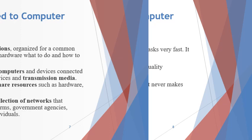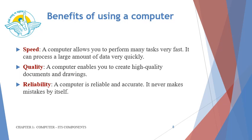Now let us understand the benefits of using a computer. The first and foremost being speed — a computer allows you to perform many tasks very fast, and it can process a large amount of data very quickly. The computer also enables you to create high quality documents and drawings. Reliability — a computer is a reliable and accurate machine. It never makes mistakes by itself. It follows the GIGO principle, which means garbage in, garbage out. Only when the input is garbage does it produce garbage output; otherwise it is the most reliable and accurate machine.